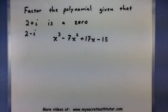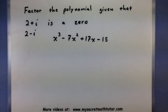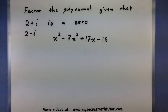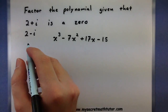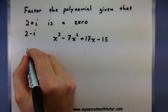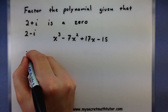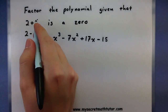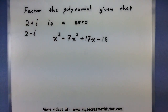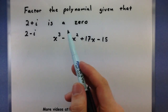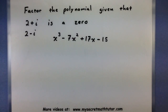So already I have two zeros of this polynomial, and since it's a third degree, I only have one more left to go. To find that last one, I can take these two zeros, turn them into factors, multiply them together, and then divide out of my polynomial.